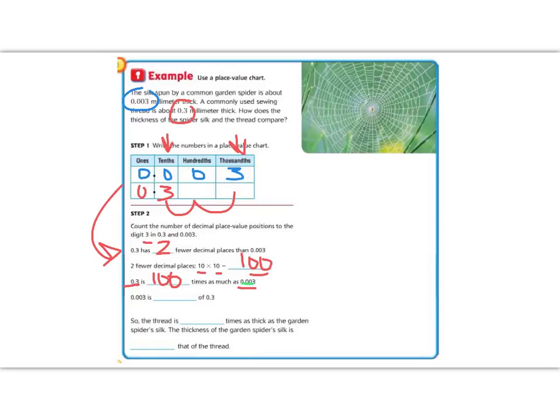Lastly, three thousandths is blank of three tenths. So, it's one one hundredth, because it's a smaller one first, and then the larger one. So, we use the fraction. The thread is blank times as thick as a garden spider's silk. It's one hundred times as thick as a garden spider's silk. The thickness of the garden spider's silk, now we flipped it, is one one hundredth of that thread. We have to be careful if we're looking at it from a larger thing to a smaller thing, or if we're looking from a smaller thing to a larger thing. That will determine whether we use a fraction or a whole number factor.